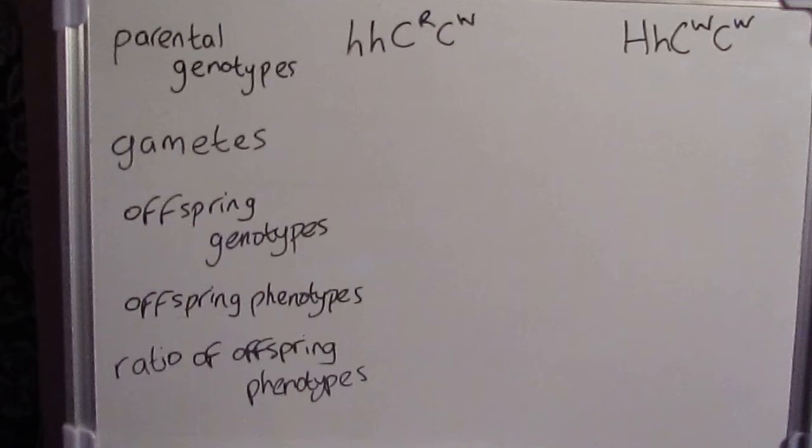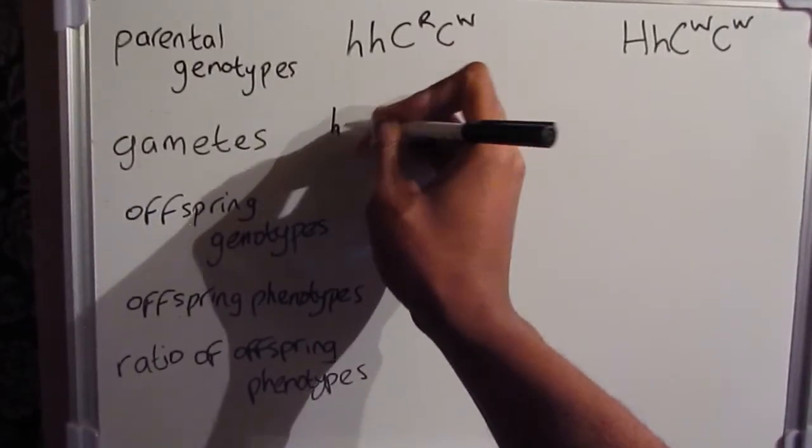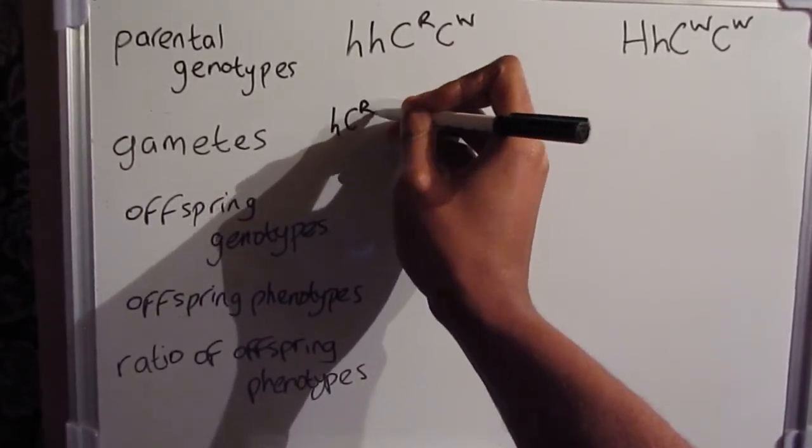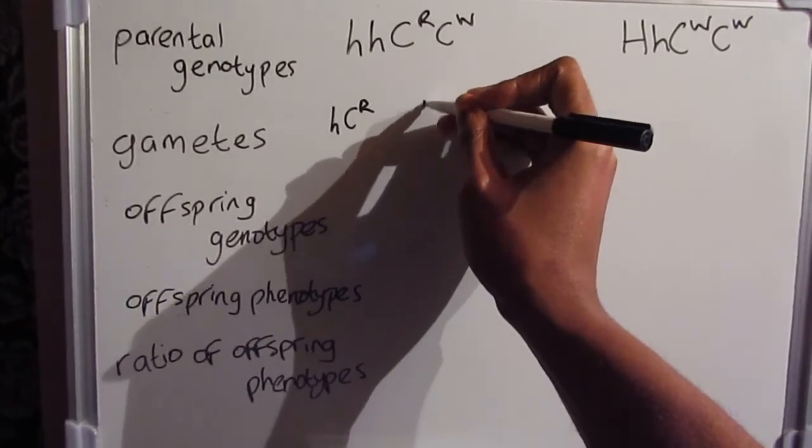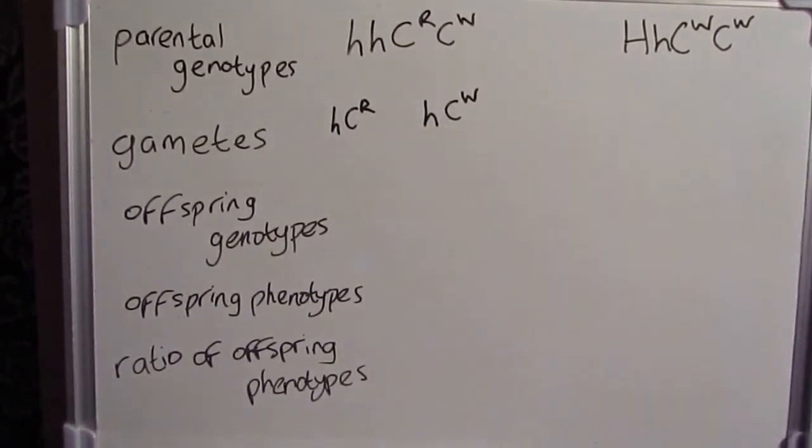For our gametes then, we must then look at the potential combinations from each parent. So from our horned roan, we must be able to get lowercase h and C superscript R for one, and lowercase h and C superscript W for the other.